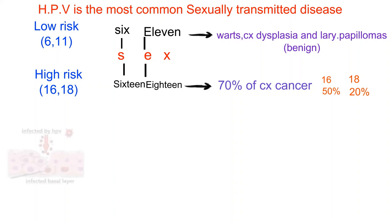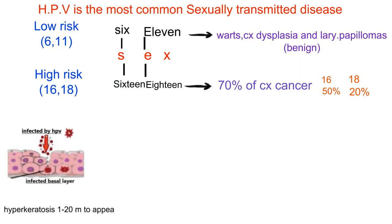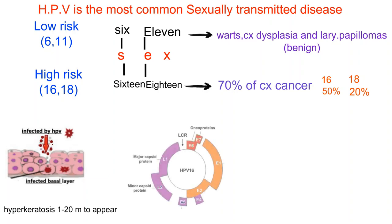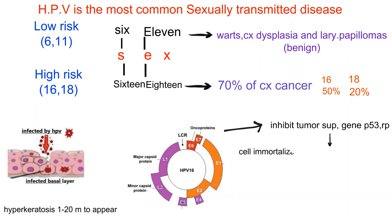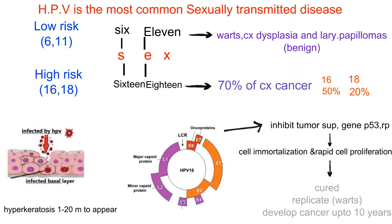The virus affects the basal cell layer of skin and mucous membrane, causing hyperkeratosis and warts, which take 1–20 months to appear. This is an expression of viral genes E6 and E7, which inhibit tumor suppressor genes P53 and retinoblastoma in humans, leading to cell immortalization and rapid cell proliferation. In most cases these transformed cells are cleared by the immune system, but in some women they replicate, resulting in warts or precancerous lesions, and if untreated, it takes up to 10 years to develop cancer.